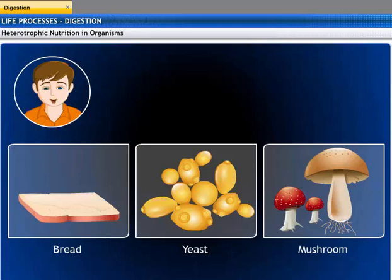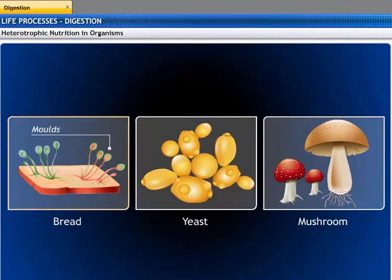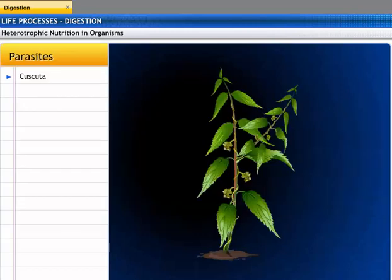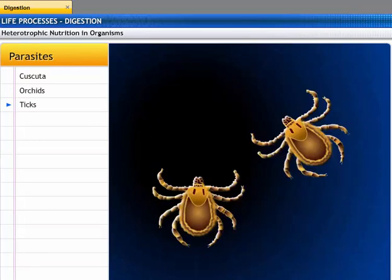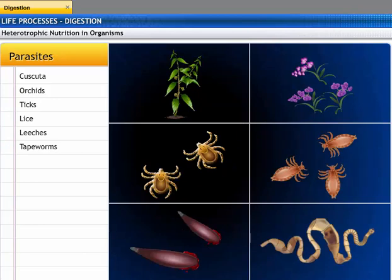Do all heterotrophic organisms take their food in the same manner? No. Different organisms obtain and ingest their food in different ways. Fungi like bread molds, yeast, and mushrooms break down non-living organic material outside their bodies before absorbing it. Parasites like orchids, ticks, lice, leeches, and tapeworms get their food from living host plants or animals without actually killing them.